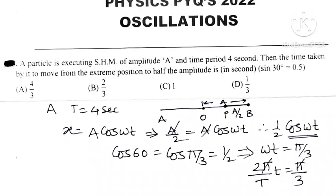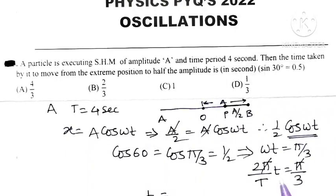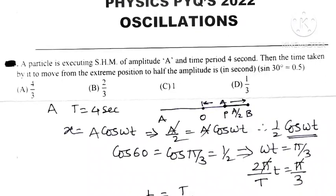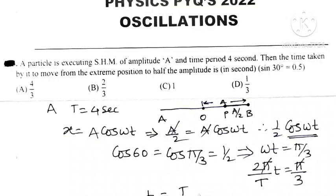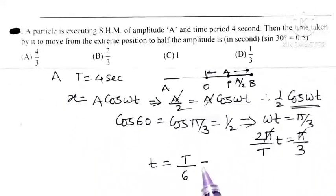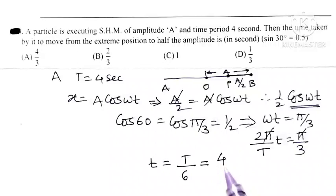This pi on two sides gets cancelled. So this implies that small t is equal to capital T divided by 2 into 3 is 6 but what is the time period given? Time period of SHM is 4.